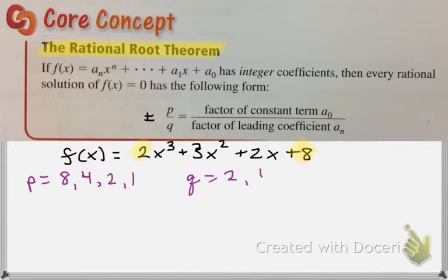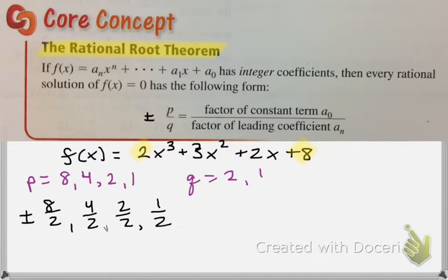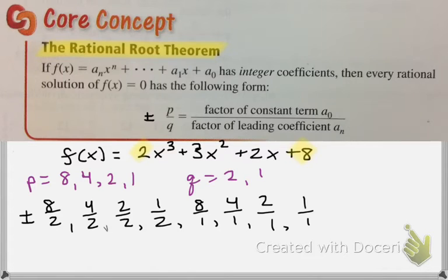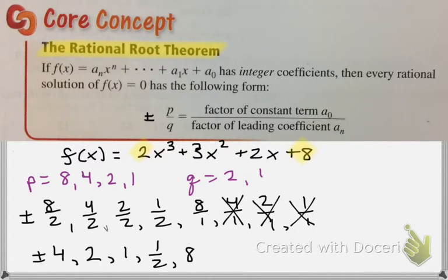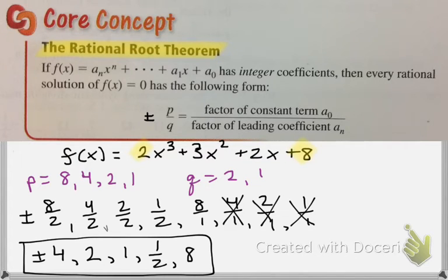Now I'm going to create all of the combinations of plus or minus p over q. First I'll do all of my p values over 2: so 8 over 2, 4 over 2, 2 over 2, 1 over 2. Now I'm going to do all of my p values over 1: so 8 over 1, 4 over 1, 2 over 1, 1 over 1. Of course some of these can be simplified: 8 over 2 is 4, 4 over 2 is 2, 2 over 2 is 1, 1 half. 8 over 1 is 8, and we've already used 4, 2, and 1. So this is a list of all of my potential answers.